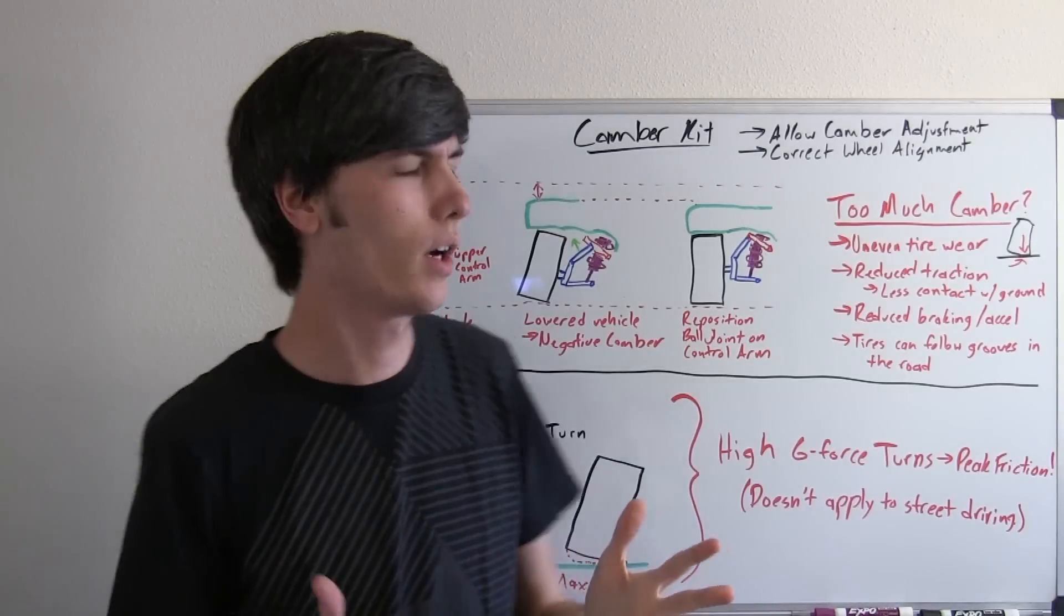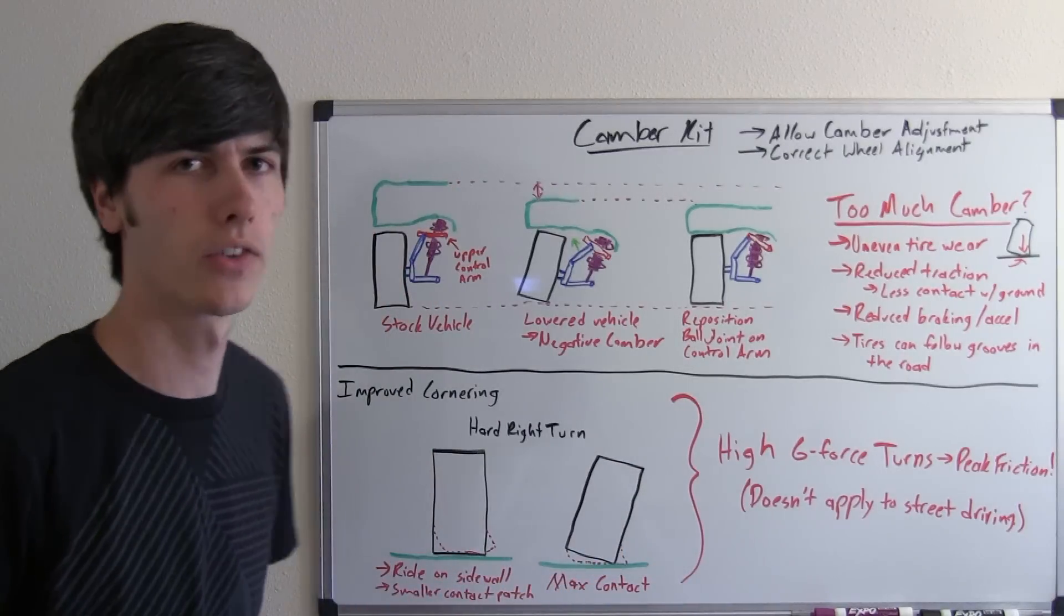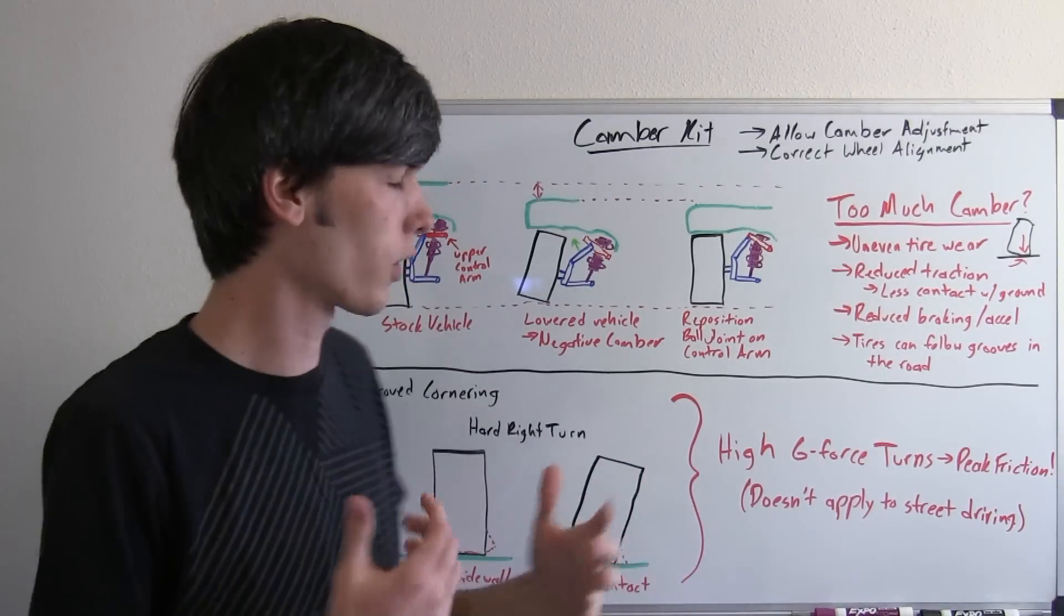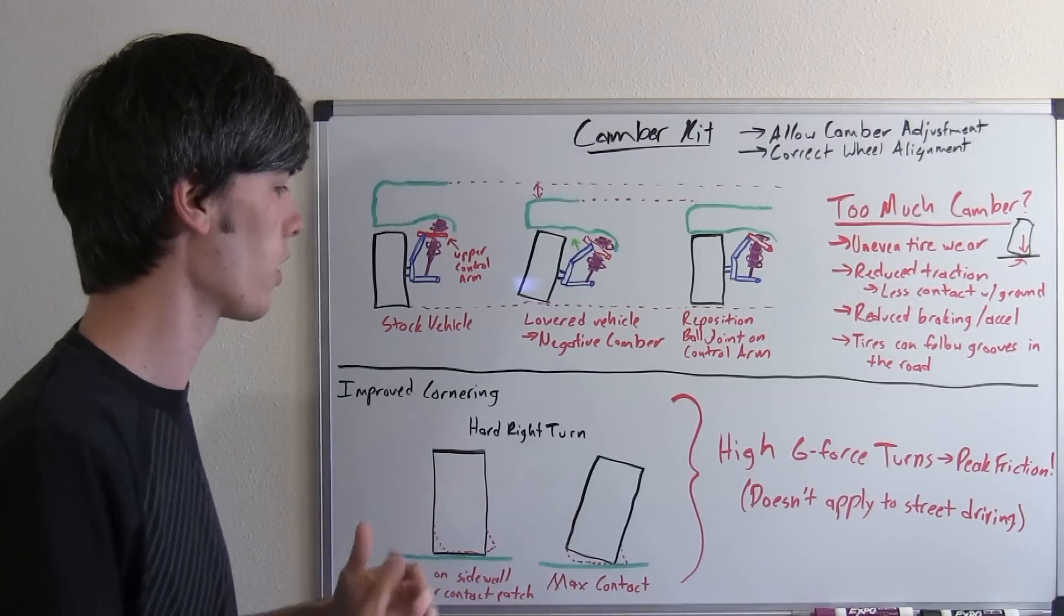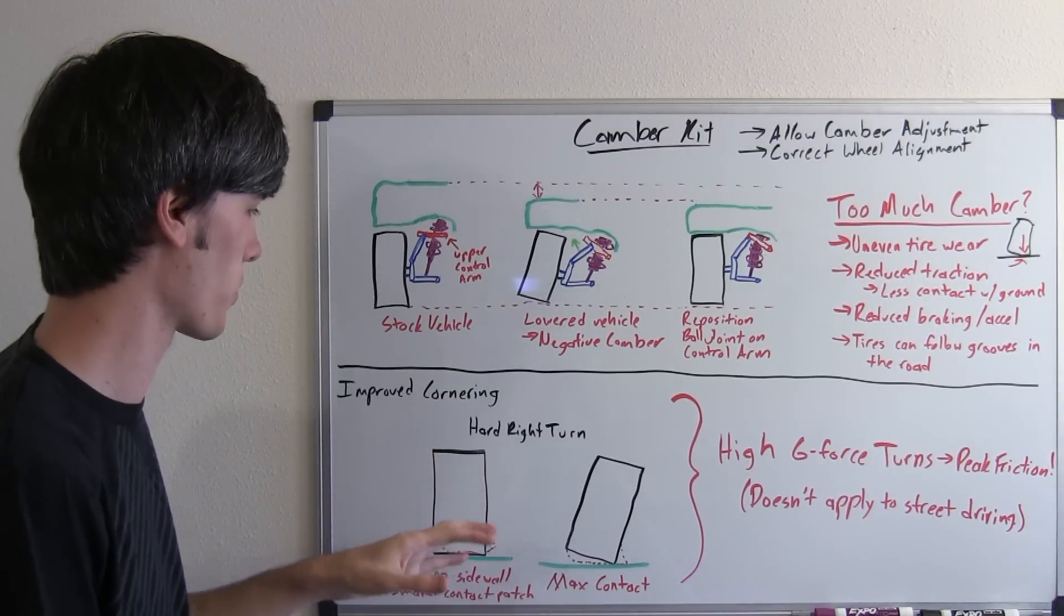So why might you want some negative camber? Well, it can help in certain situations. For example, for cornering speeds when you're going all out in cornering, basically taking high g-force turns.